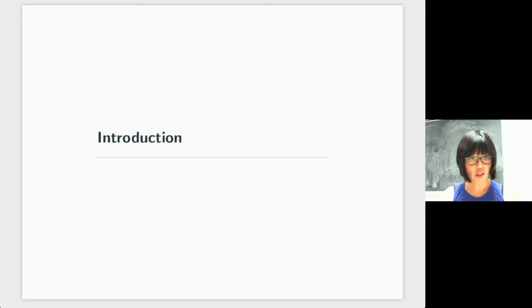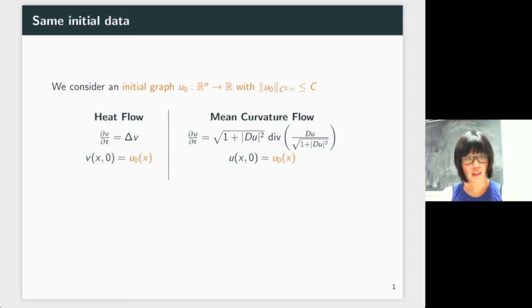We will consider the same initial data: an initial graph U₀ over the entire ℝⁿ into ℝ with the C²'ᵅ norm of U₀ bounded. C²'ᵅ is a little strong—we don't need it, but it's convenient. You probably can prove everything with C¹'¹.